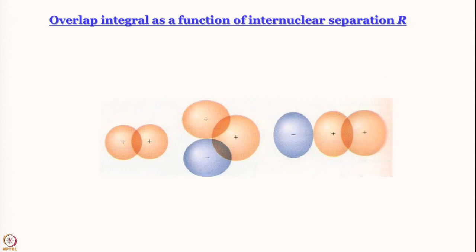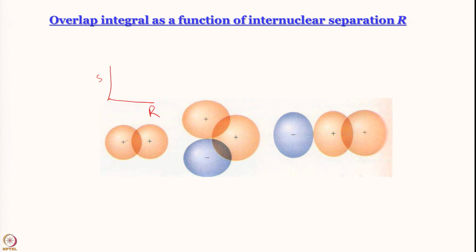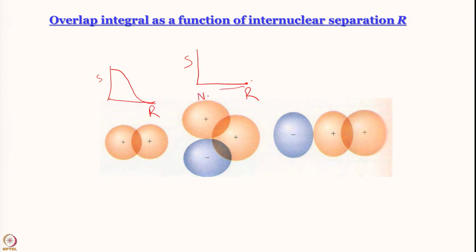The overlap integral S is a function of internuclear separation R. When the two orbitals are infinitely far apart, S = 0; as they come closer, S increases. For two 1s orbitals brought together completely (R = 0), S = 1. There are also cases of non-bonding interaction: for example, when you do point-by-point multiplication and the positive and negative contributions cancel, the overlap integral is zero — a non-bonding case.